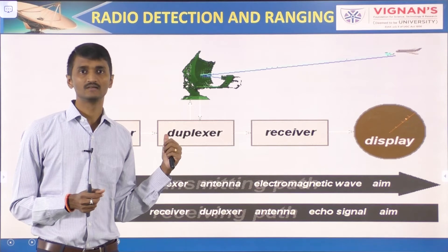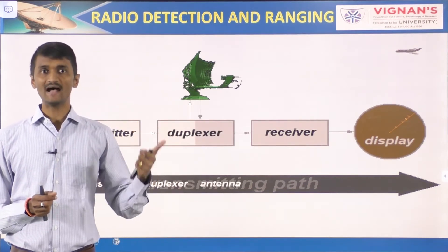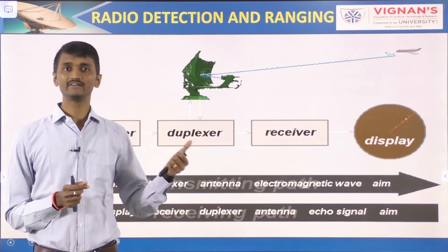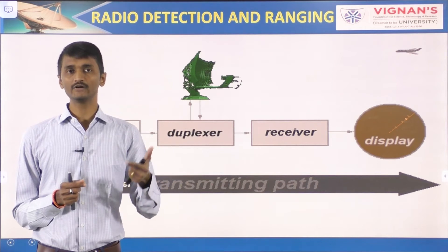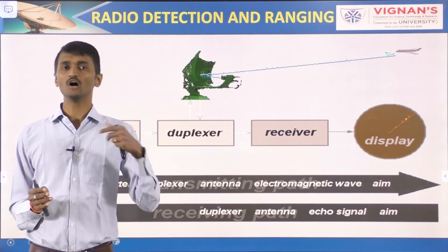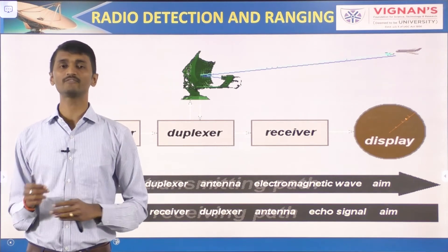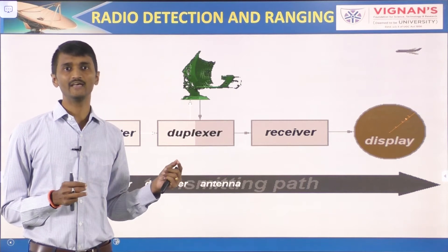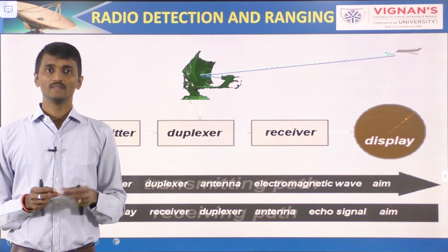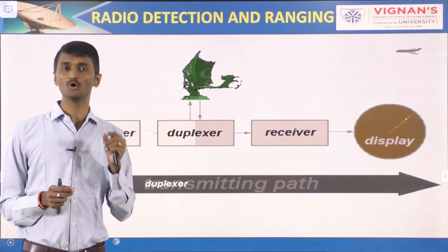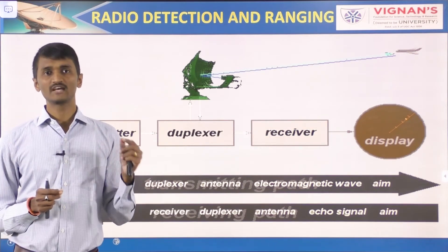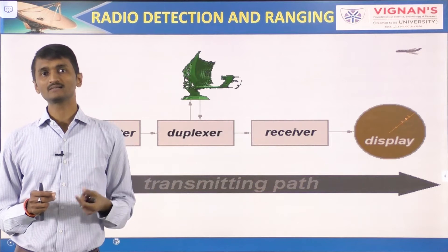The name RADAR reflects a device to detect the presence of a target and measure its range. Radar is a contraction of the words Radio Detection And Ranging. It was first developed as a detection device to warn of the approach of hostile aircraft and for detecting anti-aircraft weapons. Although a well-designed modern radar can extract more information from the target signal than merely range, the measurement of range is still one of the radar's most important functions. There seems to be no other competitive technique which can measure range as well as radar.